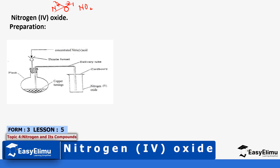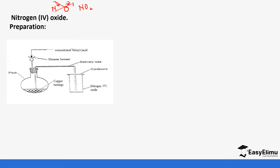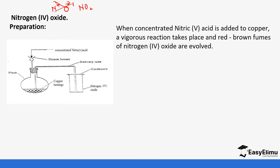NO₂ is officially prepared by reacting concentrated nitric acid with copper turnings. Notice the similarities between the preparation of nitrogen 2 oxide and nitrogen 4 oxide — in nitrogen 2 oxide we used 50% concentrated nitric acid, but in this case we use completely concentrated nitric acid. When concentrated nitric acid is added to copper, a vigorous reaction takes place and red fumes of nitrogen 4 oxide are produced.